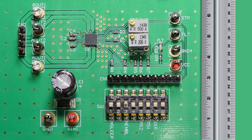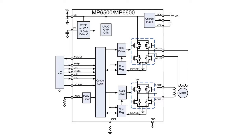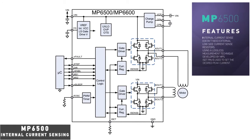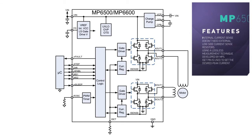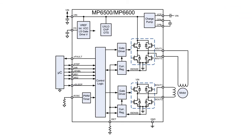Both parts operate from a single supply voltage from 4.5 volts up to 35 volts. One of the distinguishing features of the MP6500 is that it doesn't need external low-side sense resistors. Measurement and control of winding current is inside the IC using a lossless measurement technique developed by MPS. A small low-power resistor connected to the ISET pin is used to set the desired peak current.